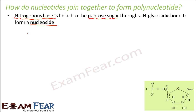So basically this sugar is a pentose sugar. Any sugar is a carbohydrate, so this carbohydrate will join to the base through a glycosidic bond. I'm not going to talk about each of these bonds in detail because we have already spoken about these in the lesson called biomolecules in class 11. In case you want to know these details you can refer to that lesson.